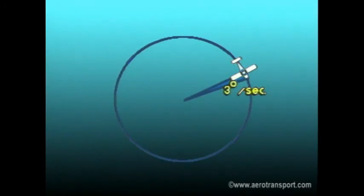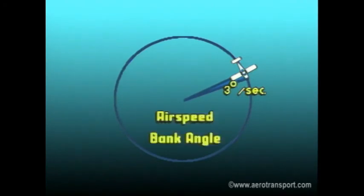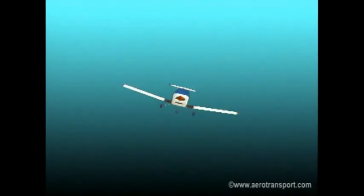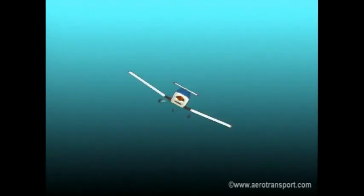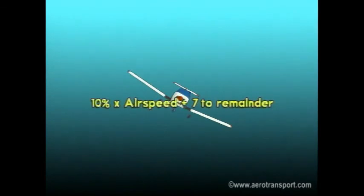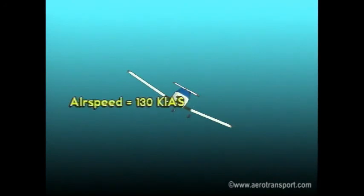A standard rate turn is made at the rate of three degrees per second. The rate at which your aircraft turns is determined by the airspeed and bank angle. Here is a simple formula to estimate the angle of bank required for a standard rate turn: take 10% of the airspeed, then add 7 to the remainder. If your airspeed is 130 knots, 10% is 13; add 7 to that and it totals 20. Therefore you would need 20 degrees of bank for a standard rate turn at 130 knots.